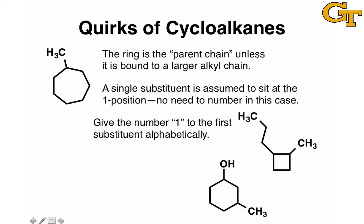For rings that have multiple substituents, we give the number one to the first substituent alphabetically. So we need to determine the names of the substituents first, and the one that comes first alphabetically is given the number one. In the example on the right, we have a propyl substituent highlighted in green and a methyl substituent highlighted in blue. Methyl comes before propyl alphabetically, so the methyl group gets number one. We then number counterclockwise and give the number two to the propyl substituent to keep its number as small as possible.